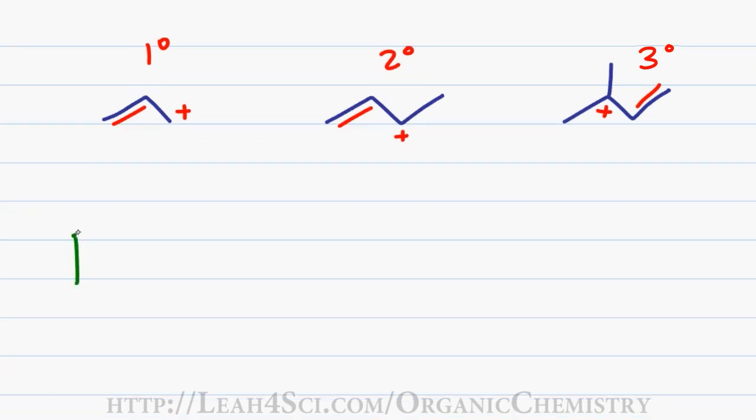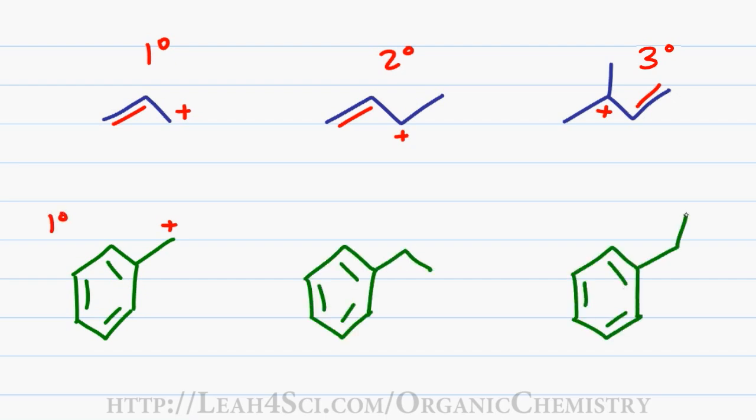Finally you have your benzylic carbocations, which are even more stable than allylic carbocations, given that the positive charge can resonate into the ring allowing multiple atoms to share that burden of charge. Here we have a primary benzylic, secondary benzylic, and tertiary benzylic carbocation.